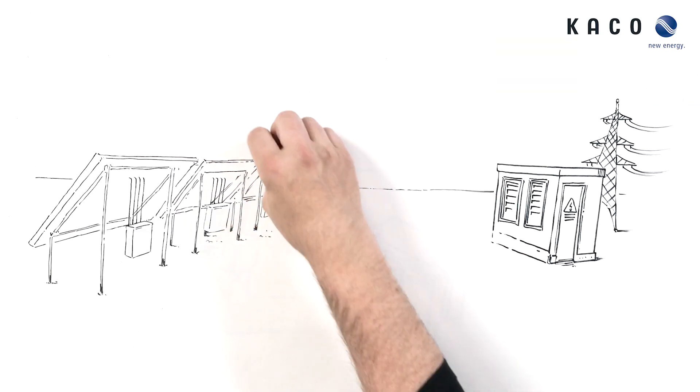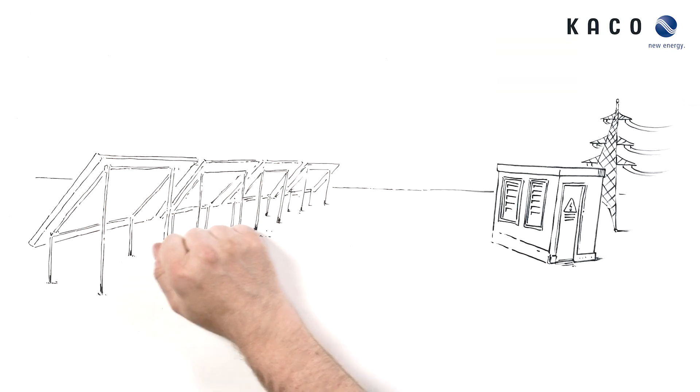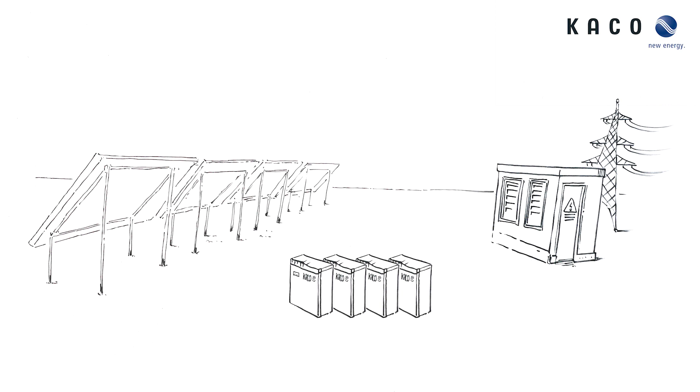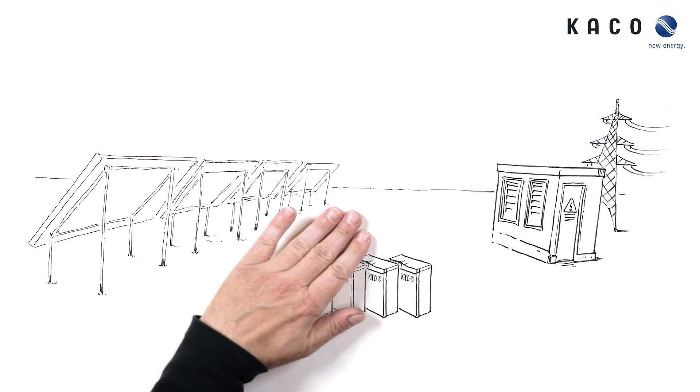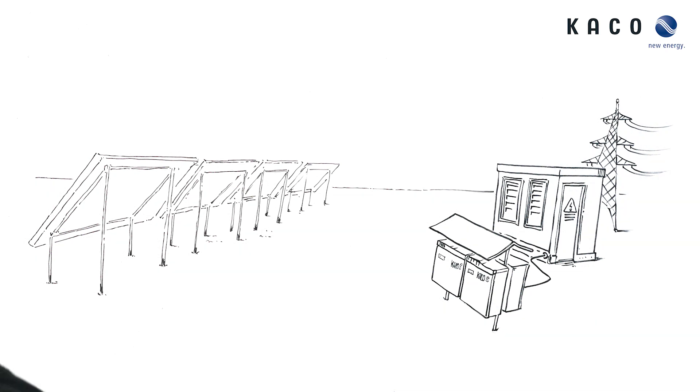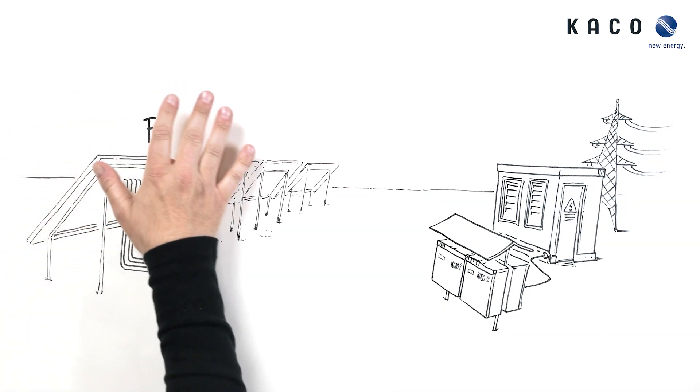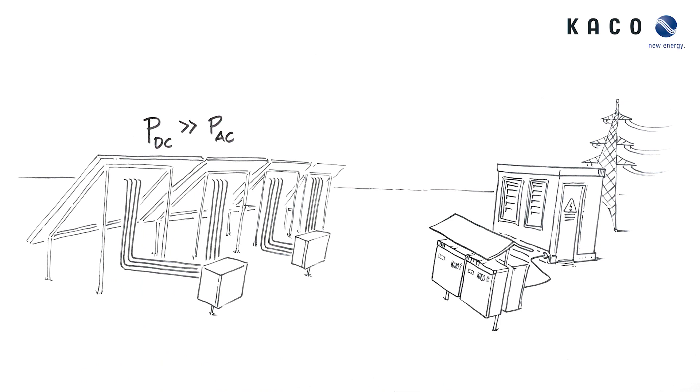And now, we swap ordinary inverters for Keiko New Energy's Blue Planets with a single MPP tracker. Move them onto a central rack near the transformer and collect the DC strings in a combiner box near the PV generator. Finally, we connect each box via one DC main cable to the input of a Blue Planet.